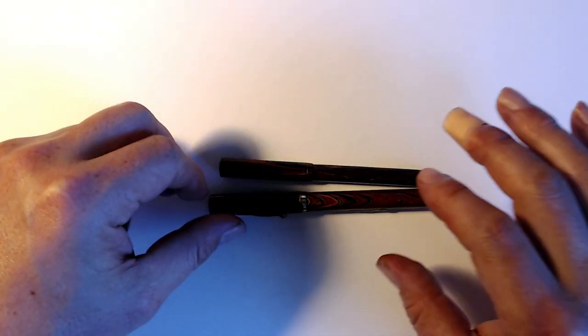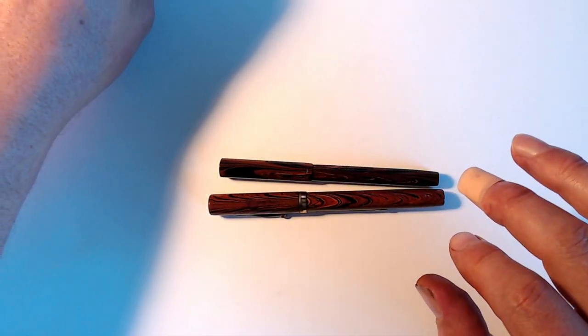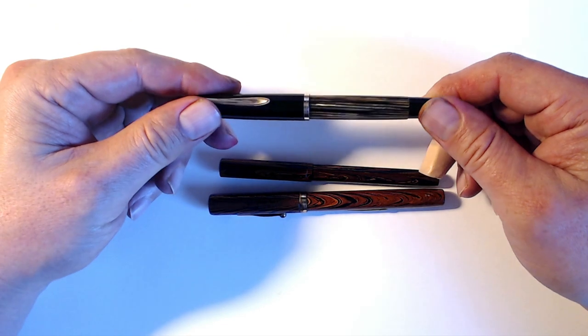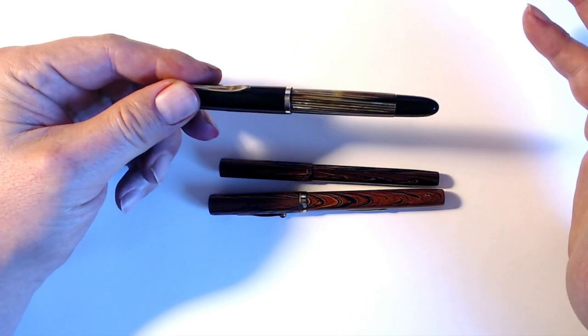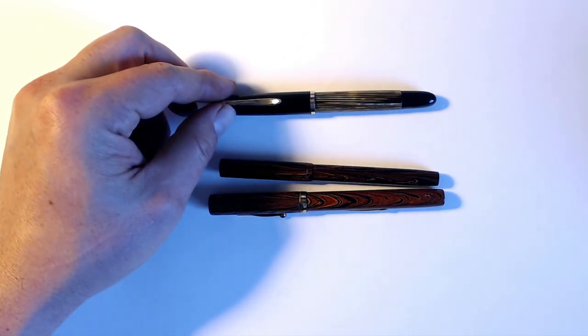This argument is not limited to vintage lever filling pens, but to every other self-filling mechanism, vintage or modern. The sturdiest piston filler, such as this Pelikan 140, will eventually suffer a broken piston rod or will need a new plunger. An eyedropper will never suffer such problems.